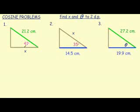The first one, we're given the angle, we're given the hypotenuse, so we can write out cosine. Cosine 41 degrees equals adjacent over hypotenuse, x divided by 21.2.